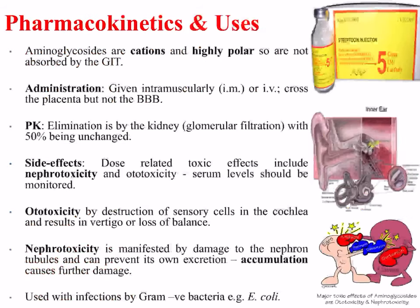Aminoglycosides are cations and are highly polar, so are not absorbed by the gastrointestinal tract; they can be given intramuscularly or intravenously. They cross the placenta but not the blood-brain barrier. Elimination is usually by the kidney via glomerular filtration, with 50% excreted unchanged. Dose-related side effects include nephrotoxicity and ototoxicity, and therefore serum levels should be monitored. Ototoxicity is caused by destruction of sensory cells in the cochlea, resulting in vertigo or loss of balance. Nephrotoxicity involves damage to the nephron tubules and can prevent the drug's own excretion, causing accumulation and further damage.